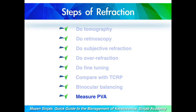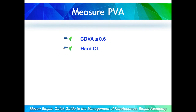Finally, we must measure the Potential Visual Acuity. Measuring Potential Visual Acuity is a must when the corrected visual acuity is 0.6 or less, and we usually do this using hard contact lenses or trial contact lenses. Potential Visual Acuity is very important because it affects our decision making.